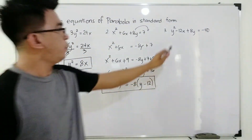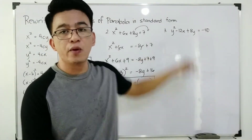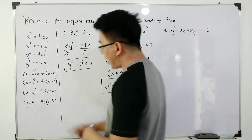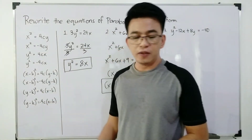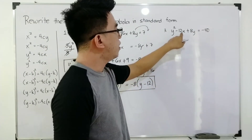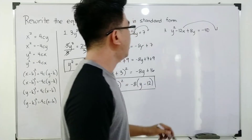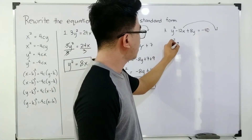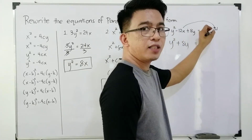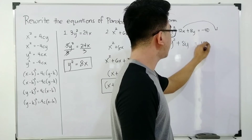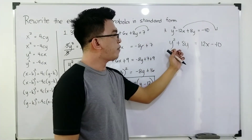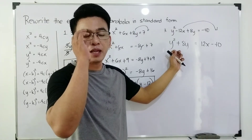Now let's proceed with item number 3. We have y² - 12x + 8y = -80. As you can see, the exponent of 2 is on the variable y. So we follow the pattern for y² = 4cx. The first thing we need to do is rearrange the terms. We need to transpose -12x to the other side, so it will become y² + 8y = 12x - 40.